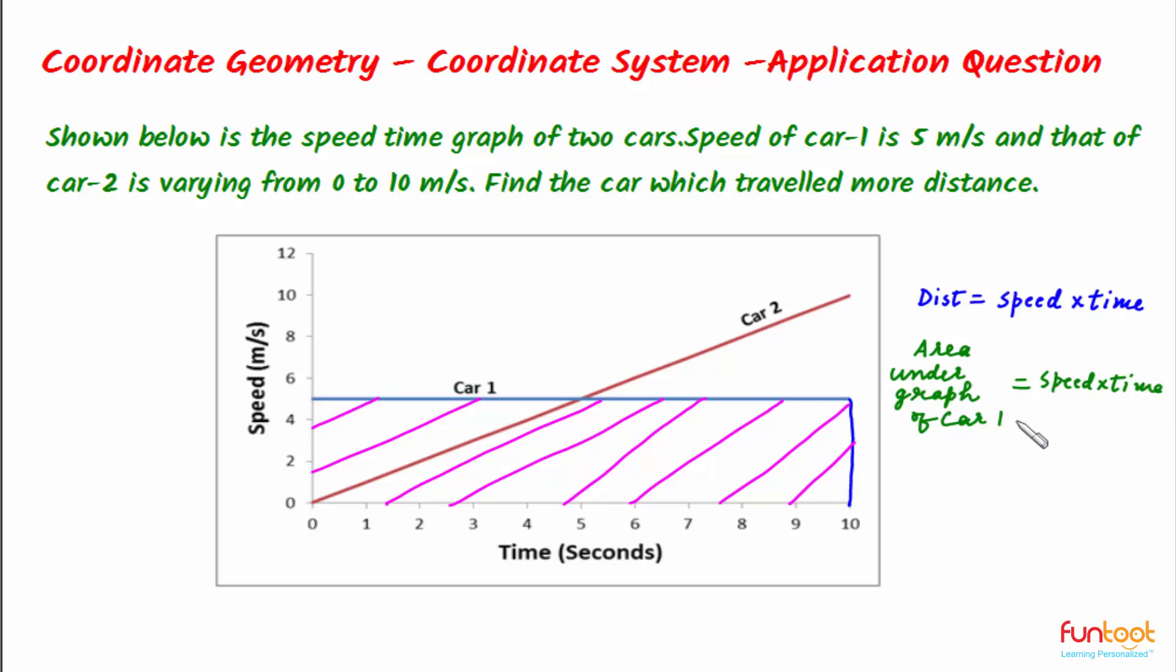From here we can say that for a speed time graph, area under the graph gives us the distance covered. This is very important for a speed time graph: distance covered is given by area under the graph. Can we apply the same concept for graph of car 2 also? With this approach, let's complete the solution.